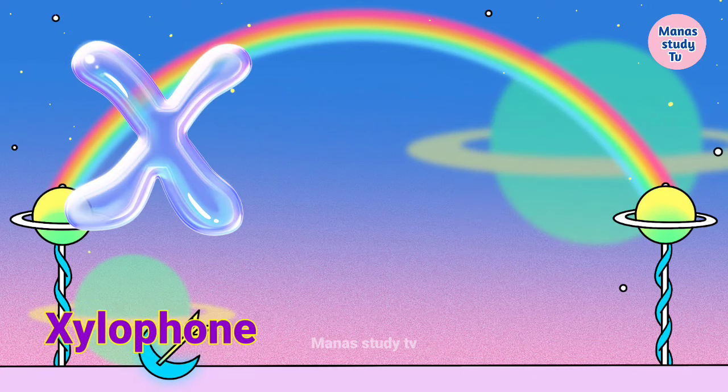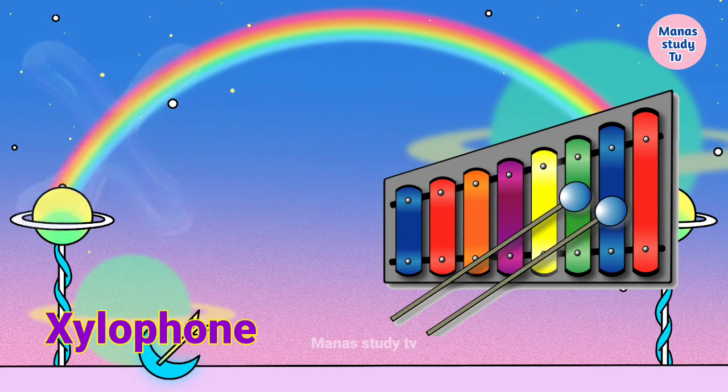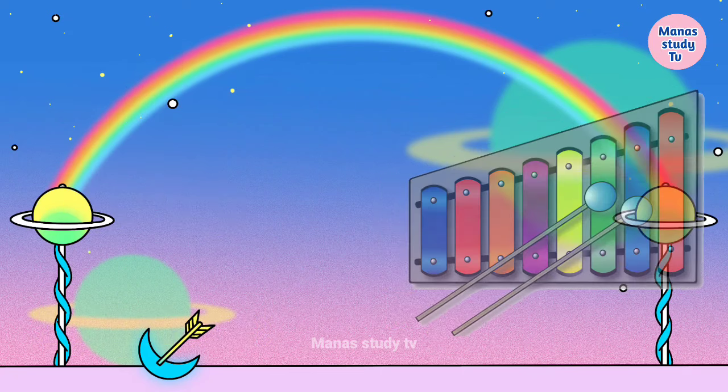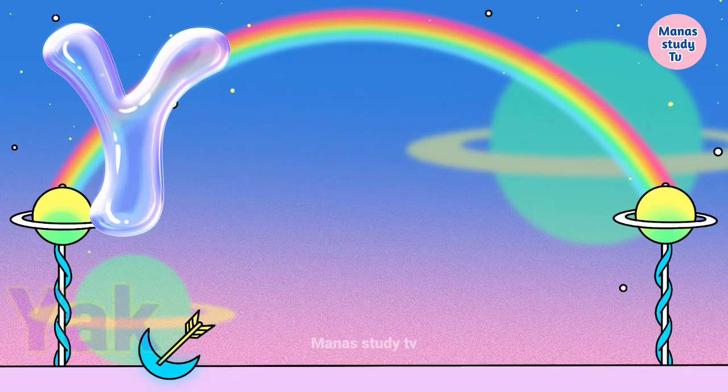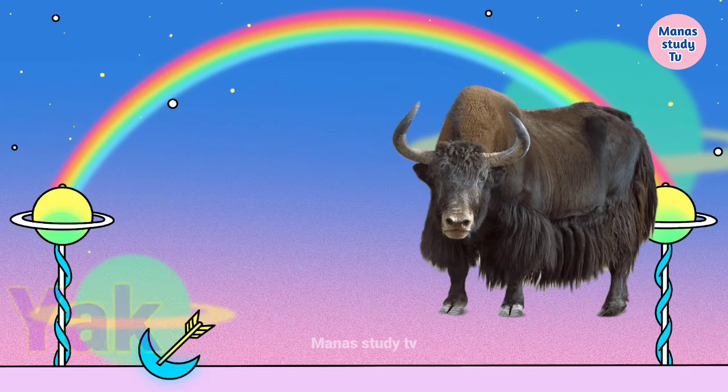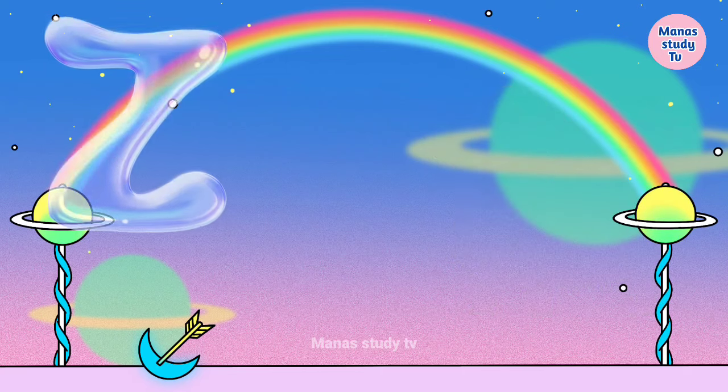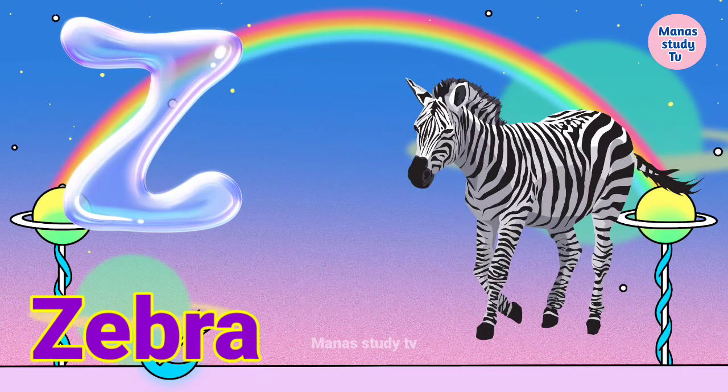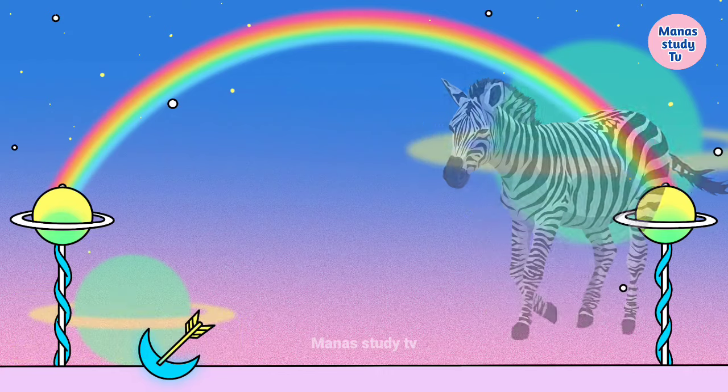X. X for xylophone, xylophone means xylophone. Y. Y for yacht, yacht means pahari saad. Z. Z for zebra, zebra means chittidara gora.